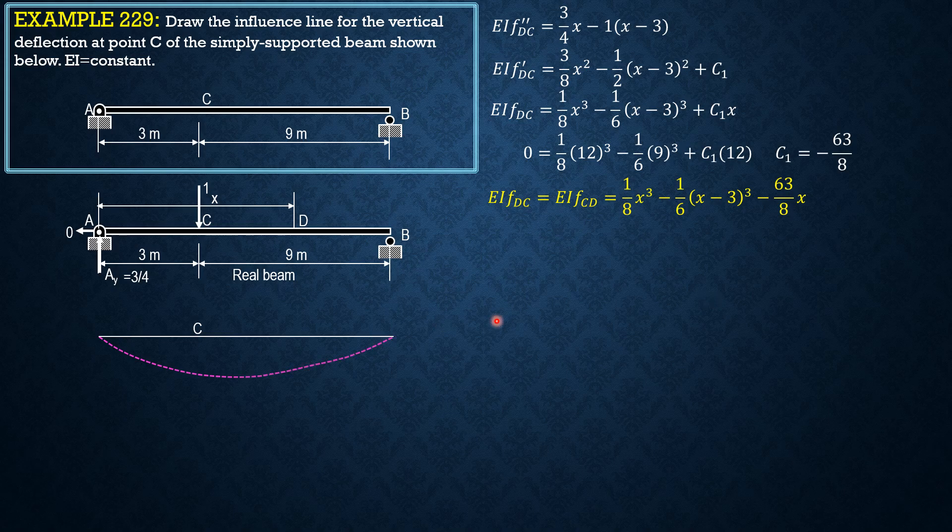The equation of this influence curve is 1 over EI times quantity 1 over 8 X cube minus 1 sixth of quantity X minus 3 cube minus 63 over 8 of X.